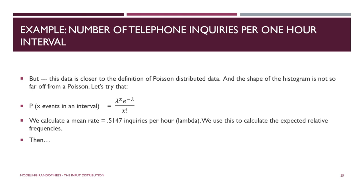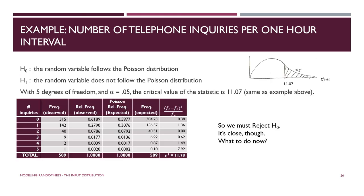Let's try the Poisson. The probability of x number of events is given by: P(x) = (lambda^x * e^{-lambda}) / x!. The parameter is lambda, the mean of the Poisson distribution. We estimate lambda from the data by computing the mean of the observed values, which gives us 0.5147 inquiries per hour.